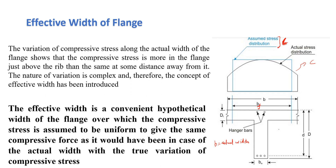The effective width bf is the convenient hypothetical width of the flange over which the compressive stress is assumed to be uniform, giving the same compressive force as the actual width with the true variation.